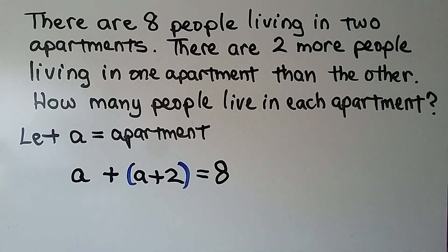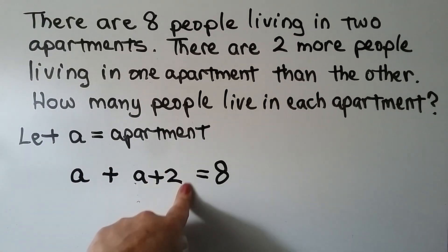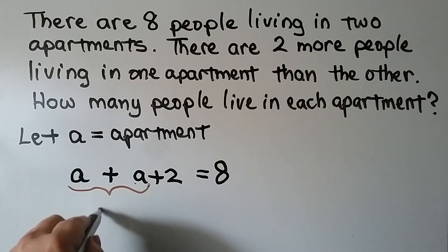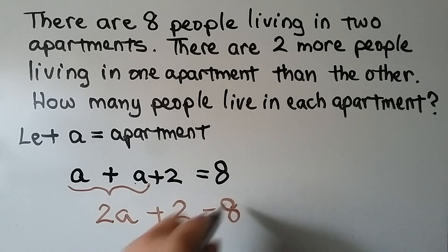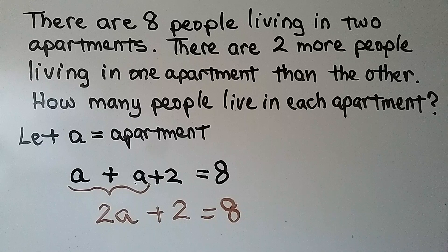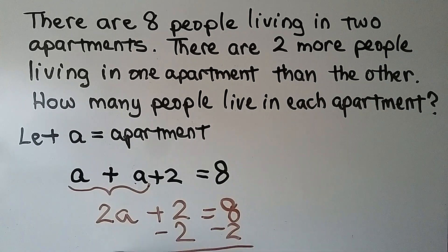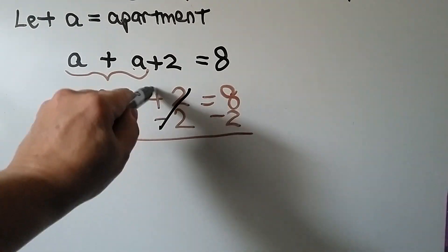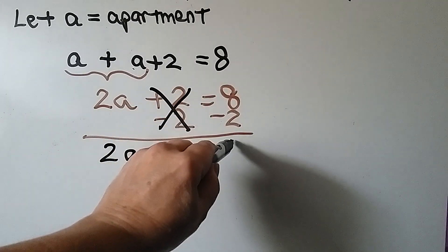Now we can rewrite this equation. If we take away these parentheses, we've got an a plus an a plus a two. So what we've got is two a plus two is equal to eight. And what we can do is take away this two from both sides of the equation. So we do minus two and minus two. Plus two minus two makes a zero pair, so we've eliminated that. Now all we have is two a is equal to eight minus two, which is six.